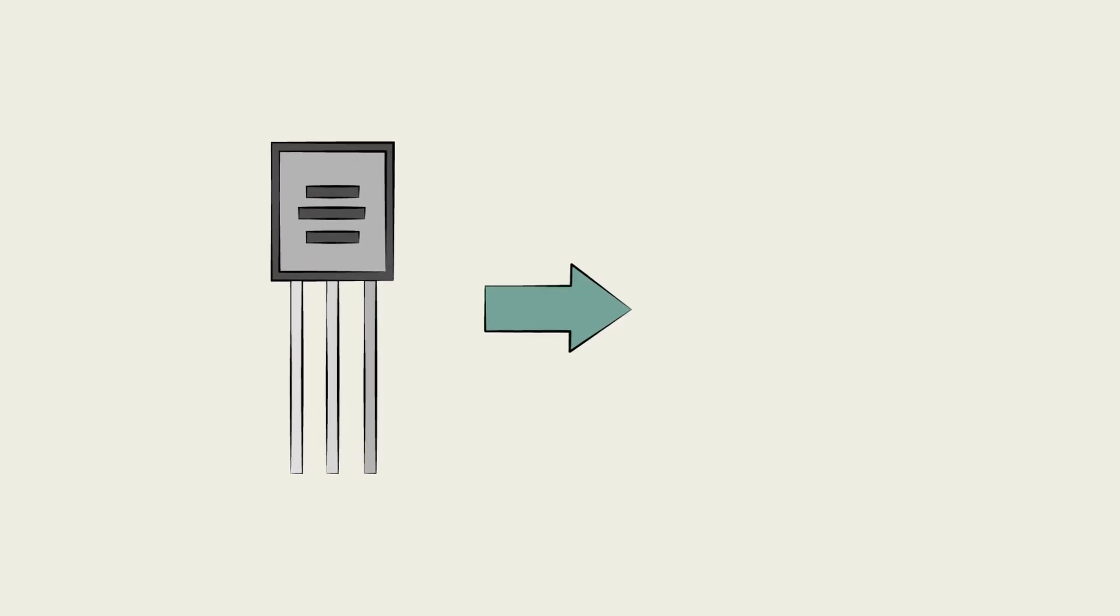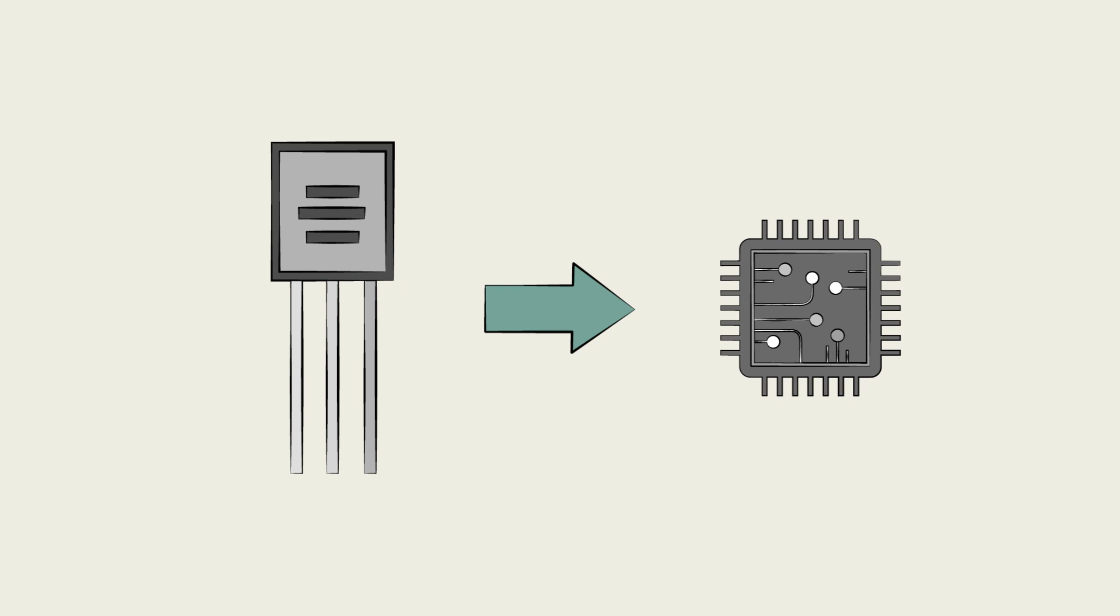Soon, transistors evolved into more sophisticated semiconductor chips, combining many more of these tiny switches. Eventually, chips could store and process digital information as zeros and ones. The rest is literal computing history.